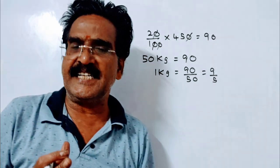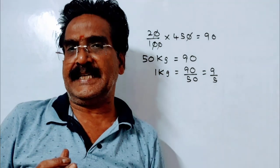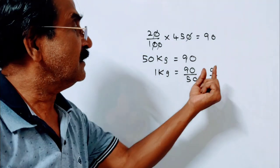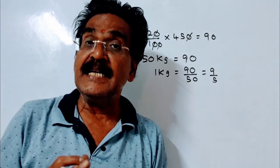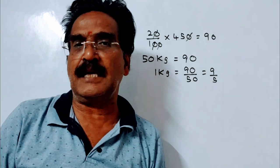Friends, what is the reduction here? 20% reduction. That means this reduced price 9 by 5 is 80% of the original price.